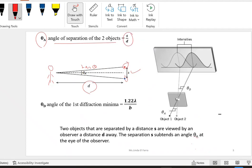So, it will be S over D. The distance between these stars, two stars, divided by the distance between the observer and the star. So, theta A is the angle of separation. Now, what is theta D? Theta D is the angle of the first diffraction minimum. The angle of the first diffraction minimum.